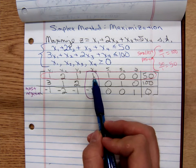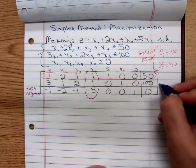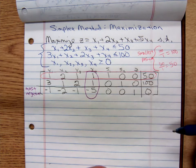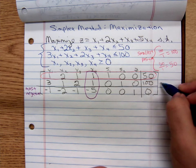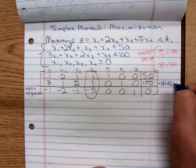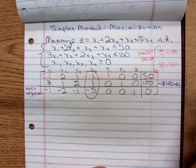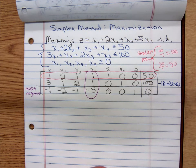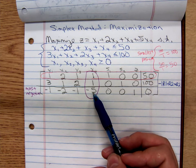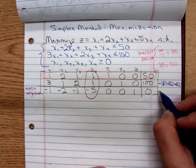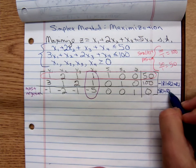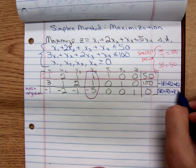We use this 1 to zero out the column. Using this 1, what does this 1 need to be so when you add it to positive 1, it gives you 0? Well, it needs to be negative 1. So negative 1 times row 1 plus row 2 gives me a new row 2. Now, what does that pivot need to be so when I add it to negative 5, I get 0? That would be 5 times row 1 plus row 3 gives me a new row 3.